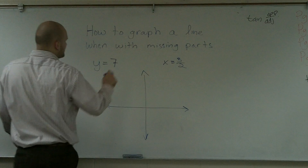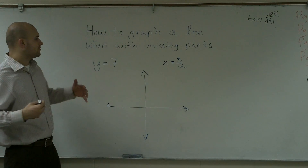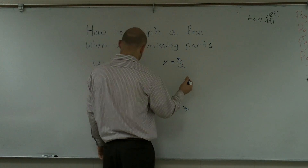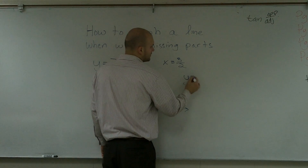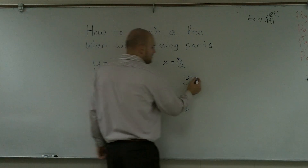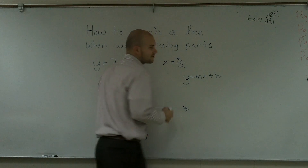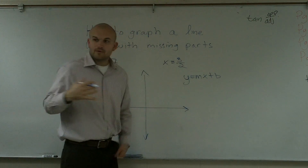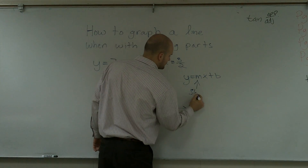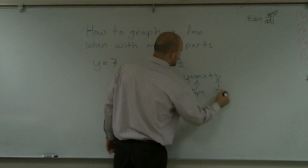What I'd like to do is show you how to graph the line when given missing parts. What I mean by missing parts is — we know that an equation can be put in the form y equals mx plus b. From there, we know that m is going to represent our slope, and b is going to represent our y-intercept.